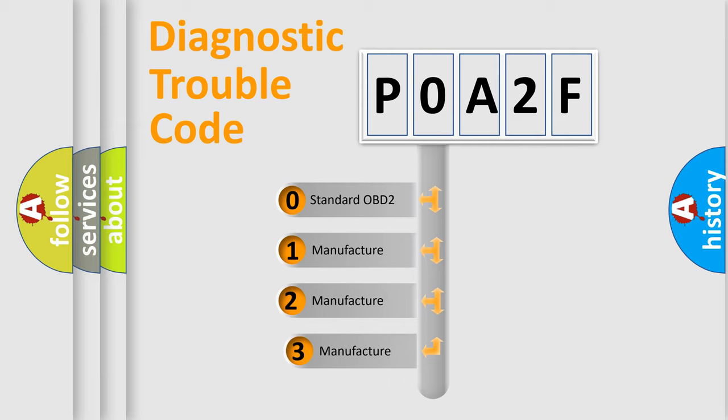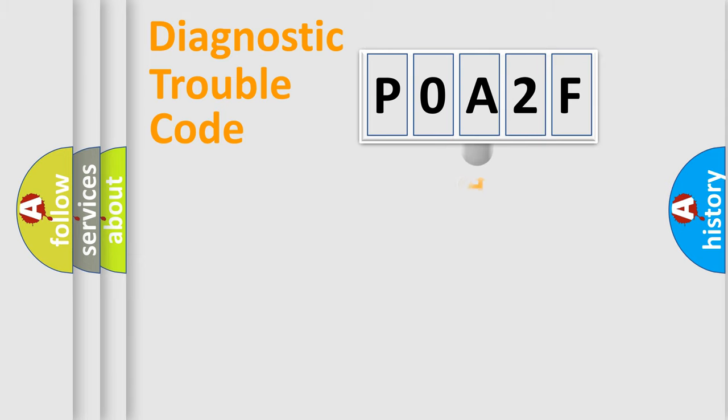If the second character is expressed as zero, it is a standardized error. In the case of numbers 1, 2, 3, it is a manufacturer-specific expression of the car-specific error.